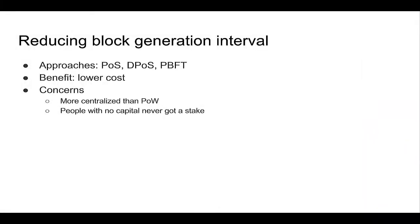Let's also look at the other factor: reducing the block generation interval. The approaches involve modifying the consensus algorithm, such as using proof of stake, delegated proof of stake, or Byzantine fault tolerance. The benefit is similar — also trying to improve scalability while lowering the cost.